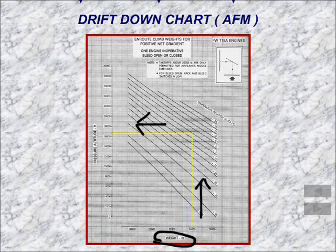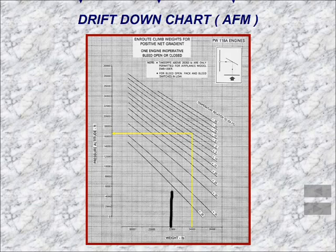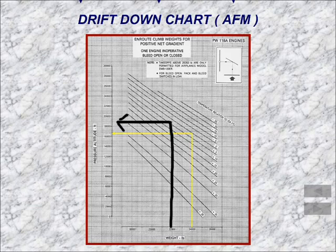If we had a lighter weight — looking at this chart, let's say we were at 22,000 pounds — and we go up to the same temperature line used here and read over, the airplane would level off at 19,000 feet instead of 16,500 feet.